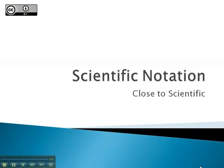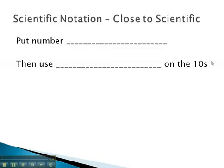In this video, we will consider how to convert a number to scientific notation if it's close to scientific but not quite exactly in scientific notation. When we're close to scientific notation, we will put the number that's not in scientific notation in scientific notation.